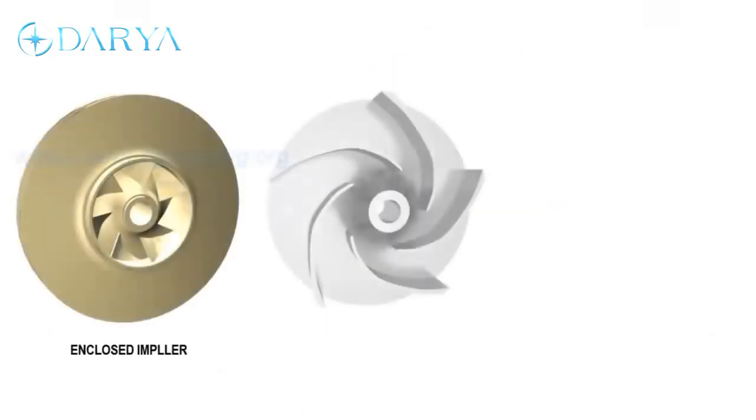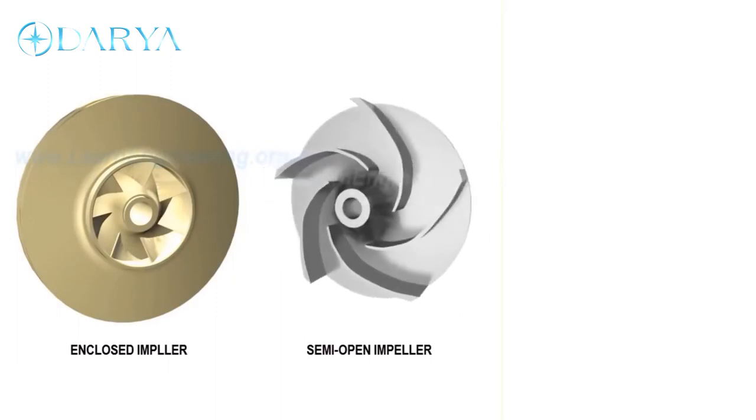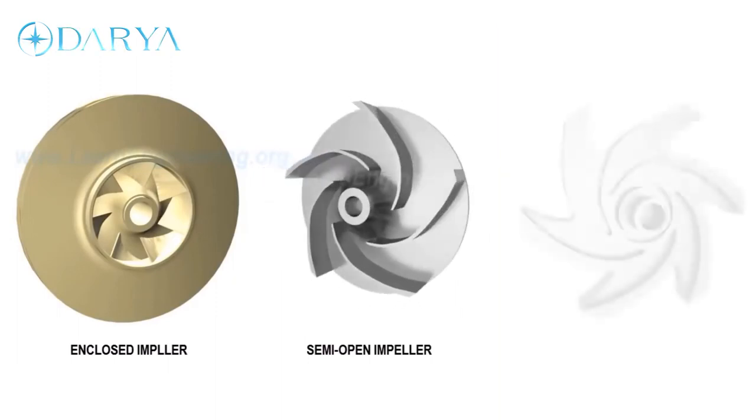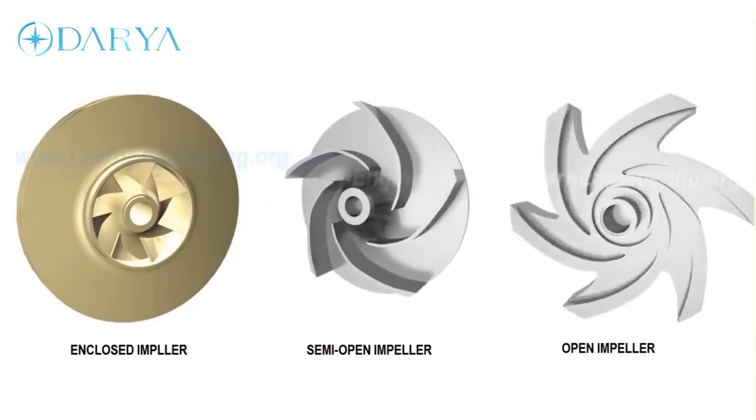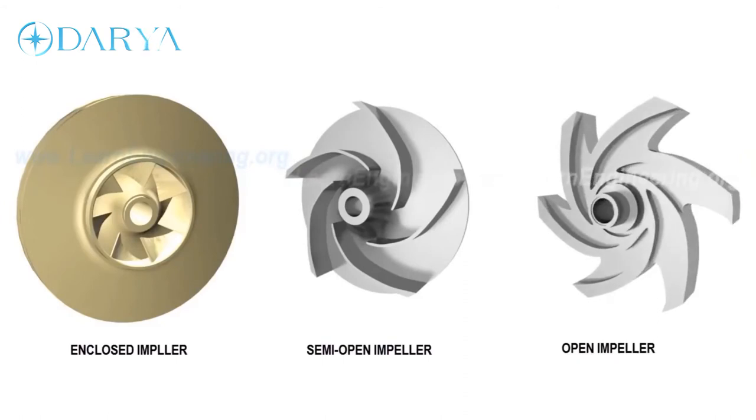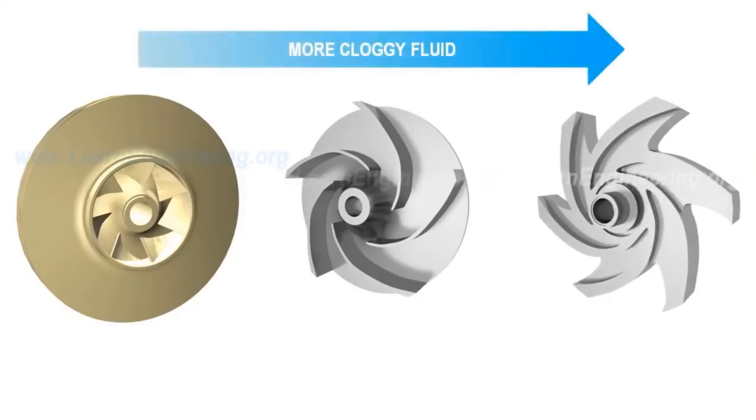Current impeller type is enclosed. Semi-open and open impellers are also in use depending upon application. If the working fluid is cloggy in nature, it is preferred to use open kind of impeller. But they are slightly less efficient.